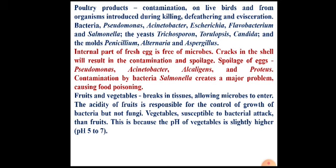Fruits and vegetables are also susceptible to contamination by microorganisms. Breaks in the tissues of fruits and vegetables during processing and delivery allow entry of microorganisms into the plant cells. Acidity of fruits controls bacterial growth, but fungi are resistant — fungi thrive in acidic environments. Vegetables are more susceptible to bacterial attack than fruits because the pH of vegetables is slightly higher compared to fruits.